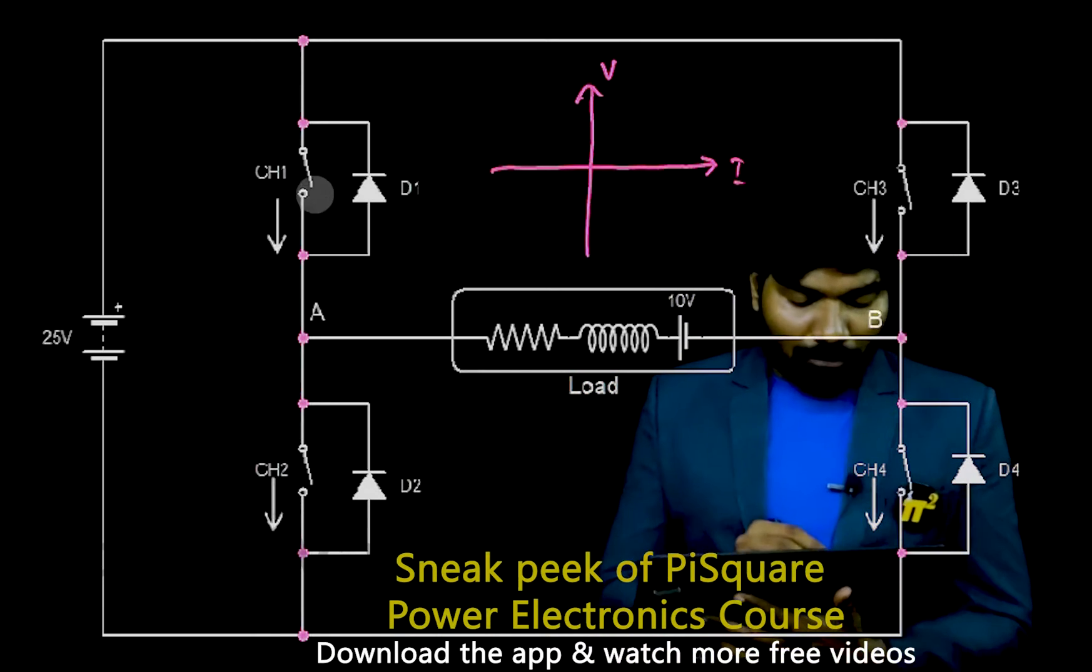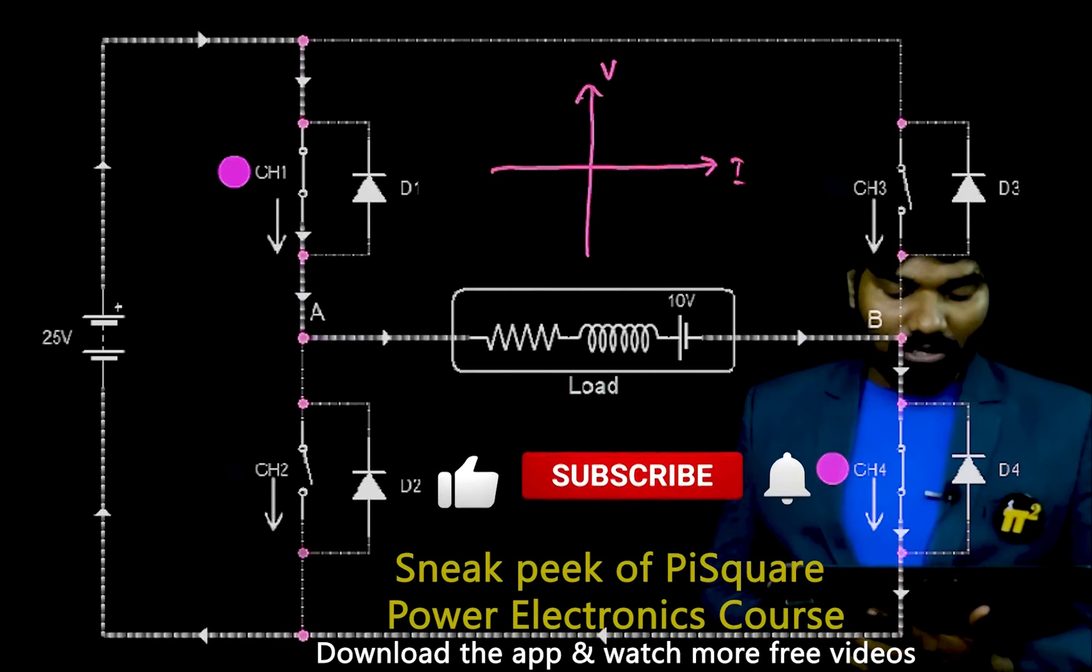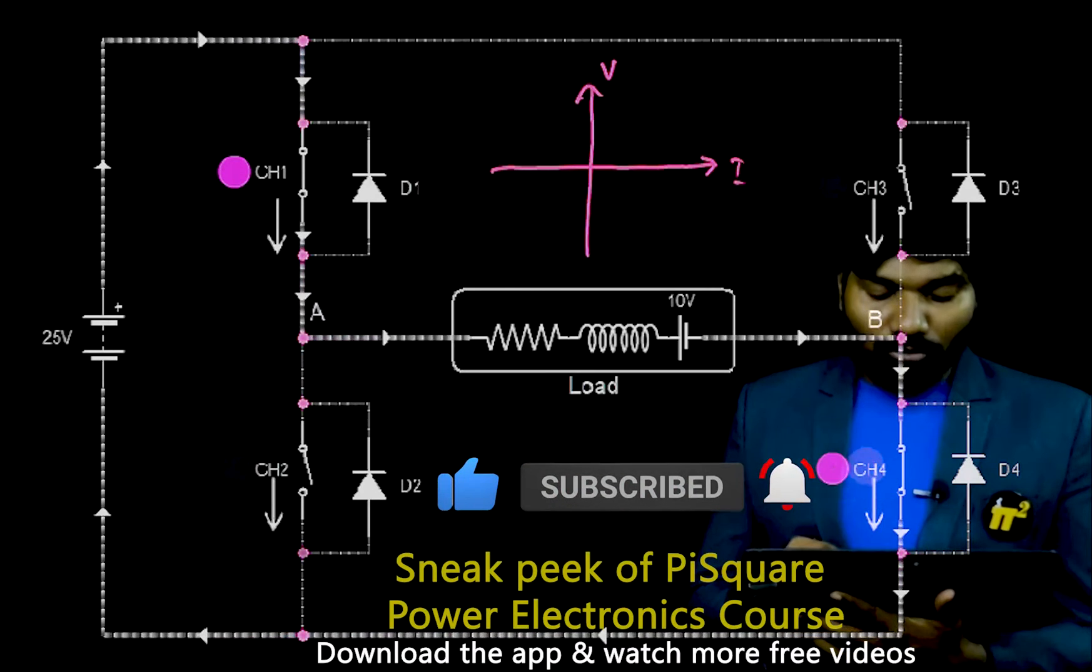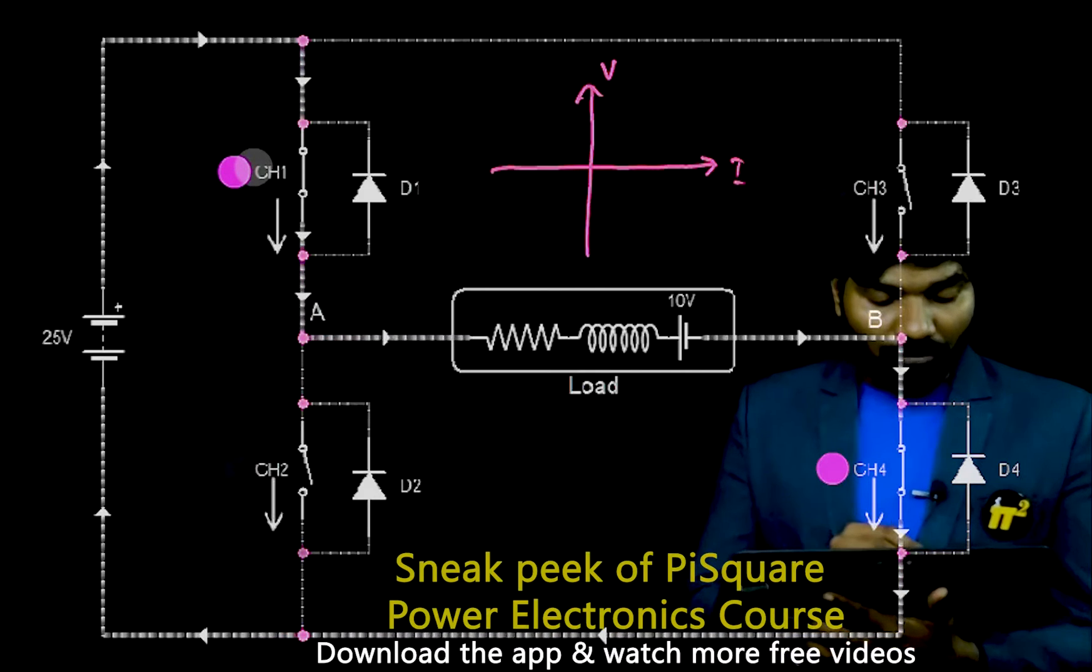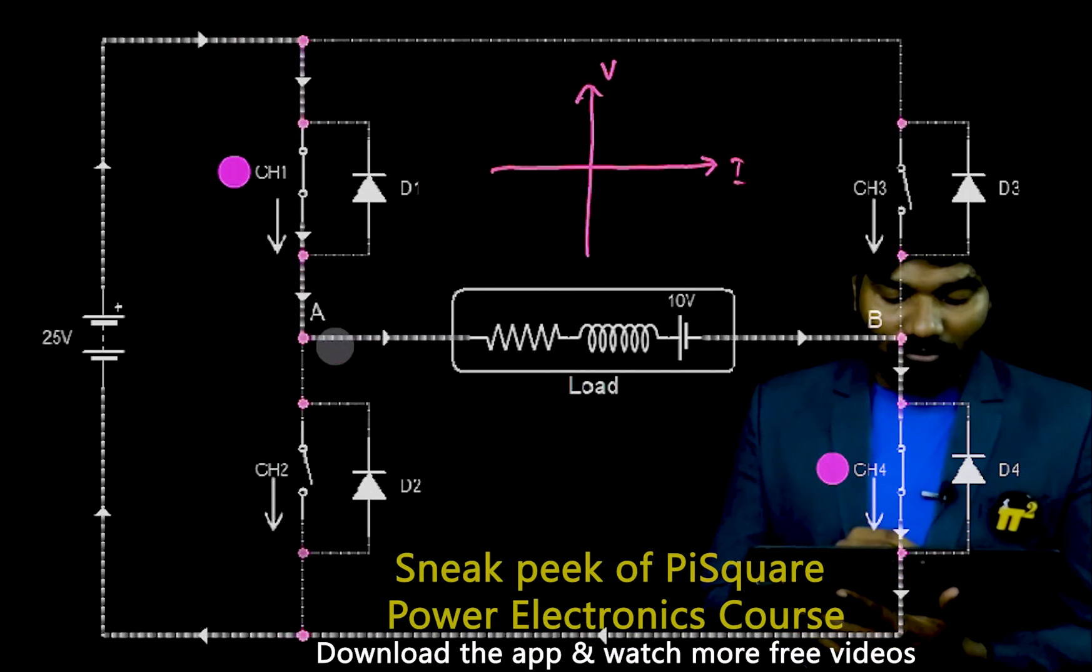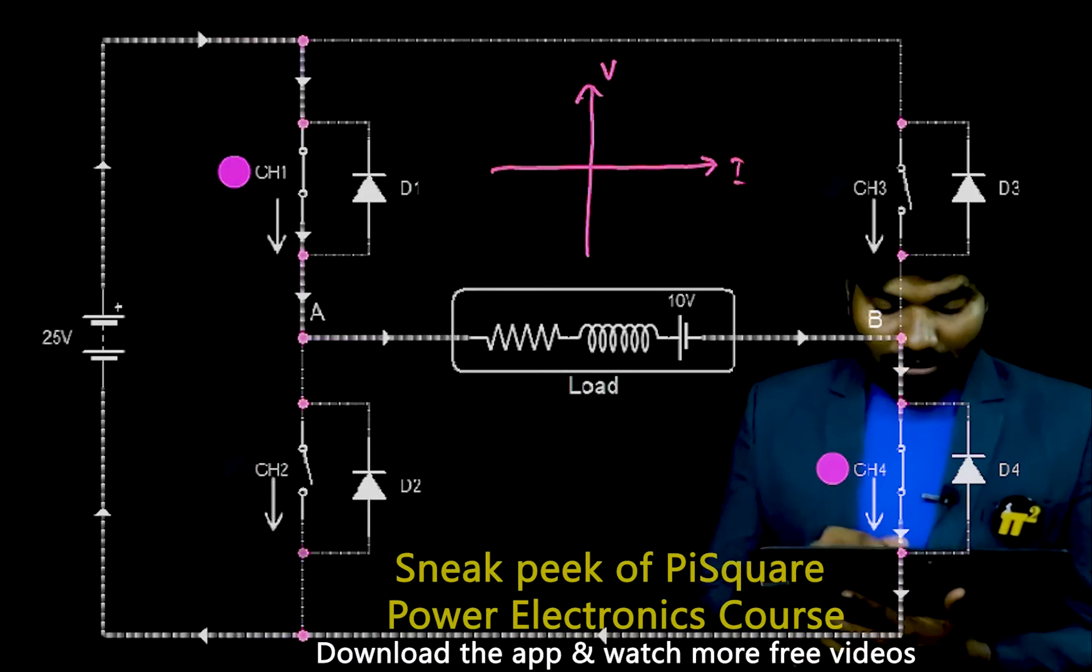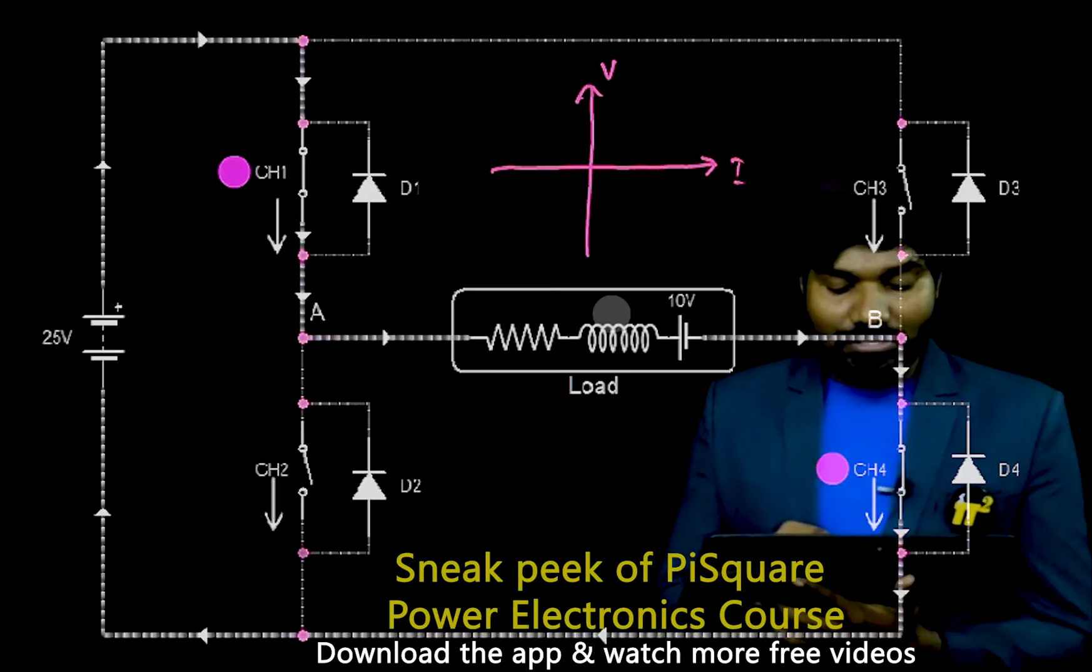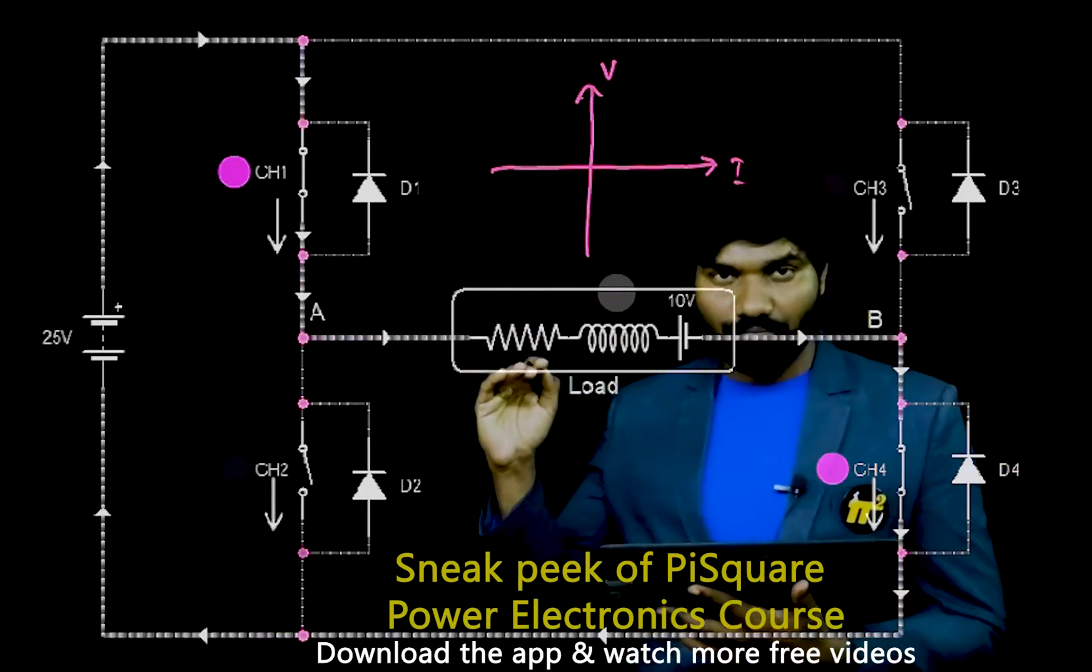Let's see what is going to happen if we operate in first quadrant. See what is happening here? Here CH4 is on and CH1 is on. Both are on. So current is flowing. See the current? How nice the current is flowing. If I give the current direction, this is the current direction. Slowly current is increased and at one point current is maintaining that value.